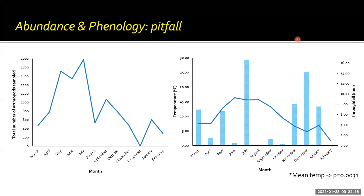Looking at changes in abundance and phenology — this is a representation from pitfall traps. We had similar trends with slightly different numbers from the different trapping methods. This shows a generally classical phenological pattern of change across the year, with interesting troughs and peaks that we interrogate further in relation to microclimate data. There's the classic pattern of increasing numbers towards summer, a dip, reasonable numbers in autumn, low numbers in winter, but actually reasonable activity still in January and February for that particular year.